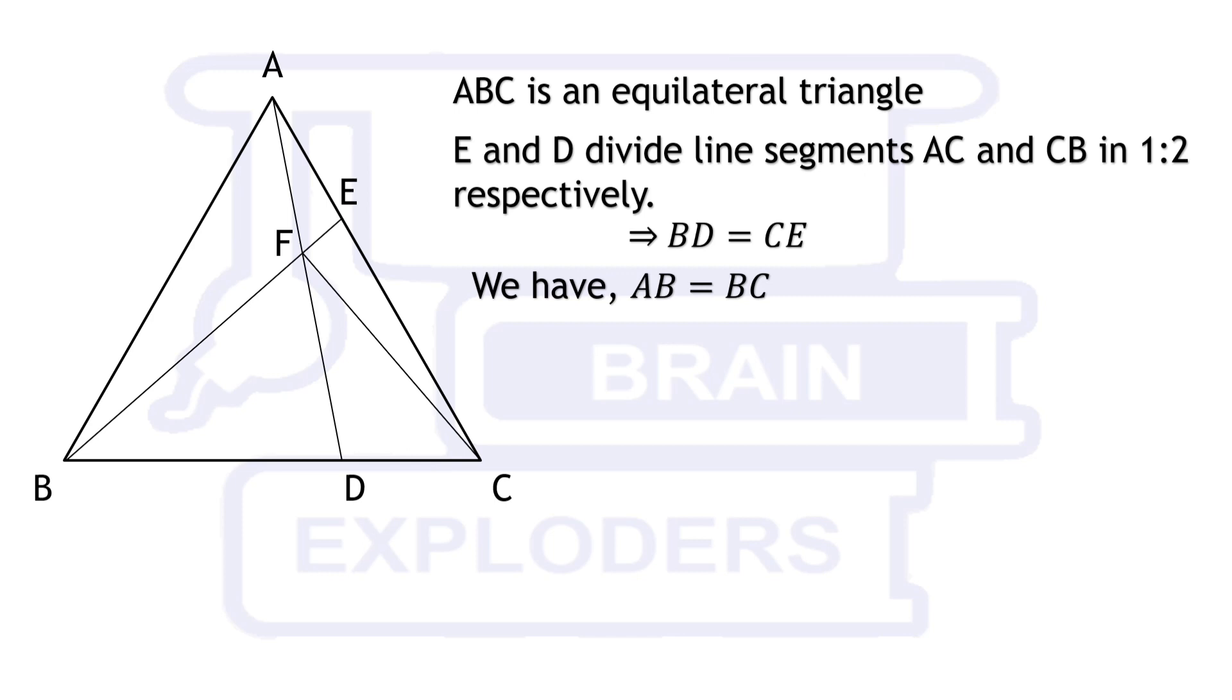We already have AB equals BC because ABC is an equilateral triangle and angle ABD is equal to angle BCE. It implies that triangle ABD is congruent to triangle BCE by side angle side axiom.